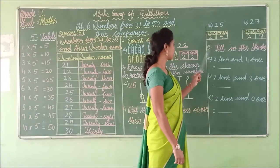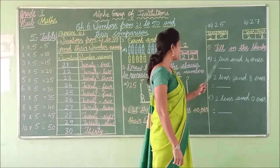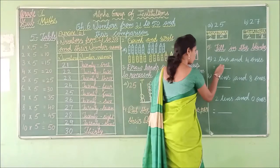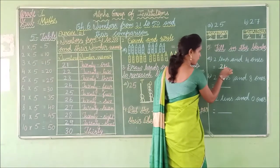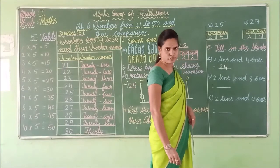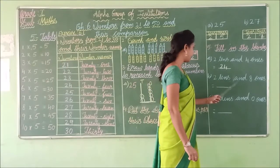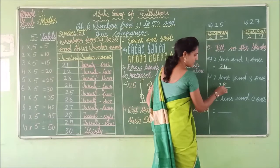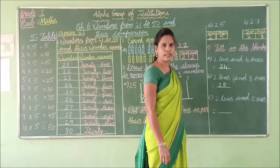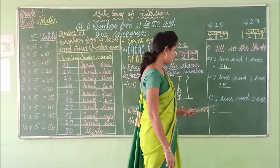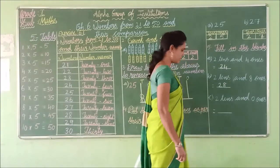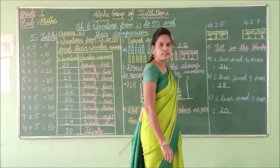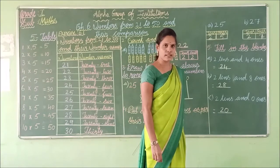Next: Fill in the blanks. See the first one: 2 tens and 4 ones — this is equal to 24. Next: 2 tens and 8 ones — that is 28. Next: 2 tens and 0 ones — that is 20.